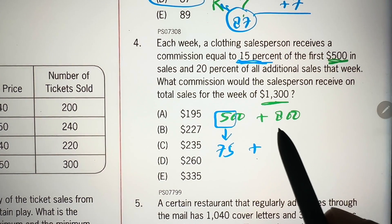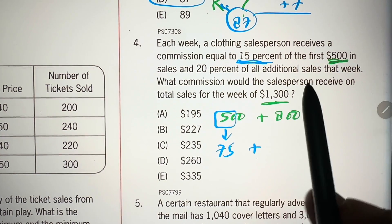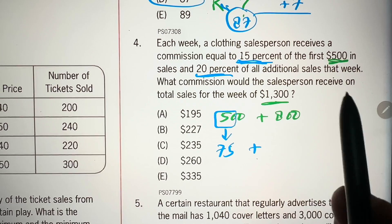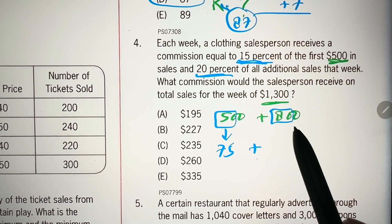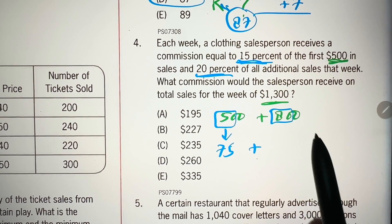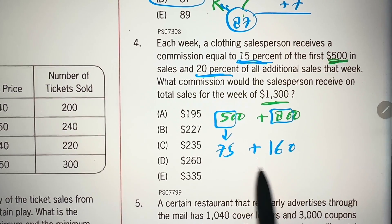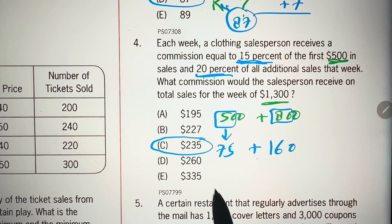And then, commission on this $800, additional sales is 20%, right? So, 10% is 80. 20% is double of that, that is $160. And, 75 plus 160 is $235, that's the answer.